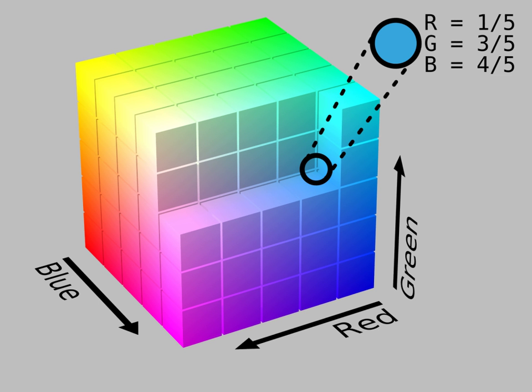An RGB color space is any additive color space based on the RGB color model. A particular RGB color space is defined by the three chromaticities of the red, green, and blue additive primaries, and can produce any chromaticity that is the triangle defined by those primary colors.